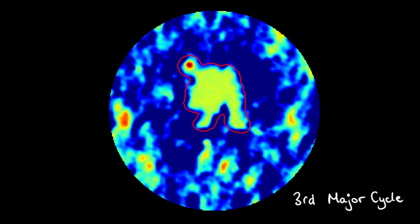This rapid mask evolution during the first few major cycles is often seen when cleaning images, especially those with extended emission or multiple sources, or both.